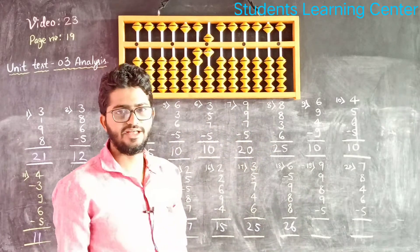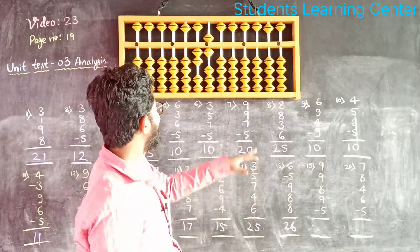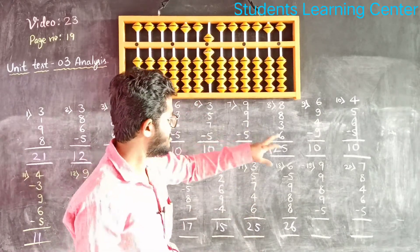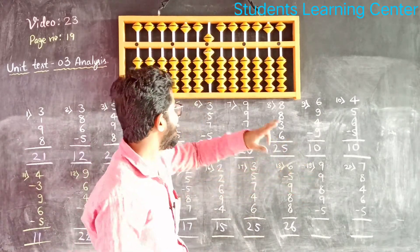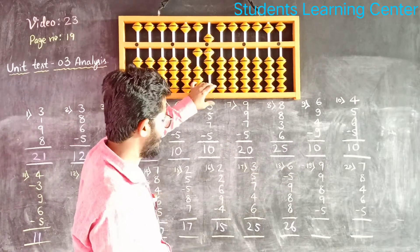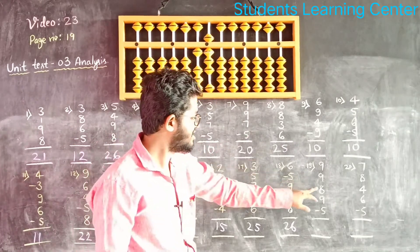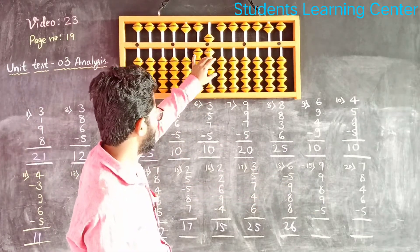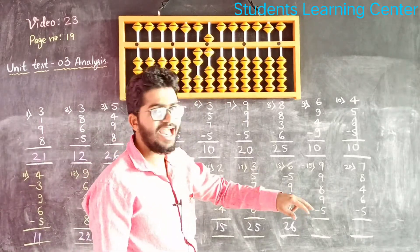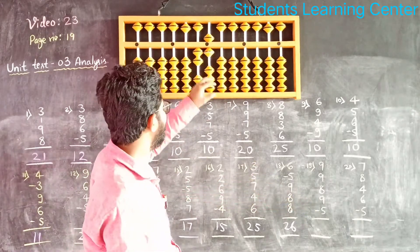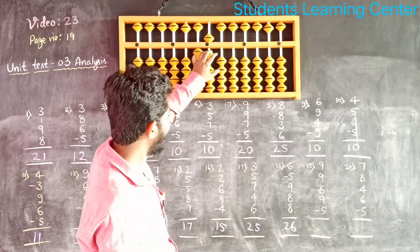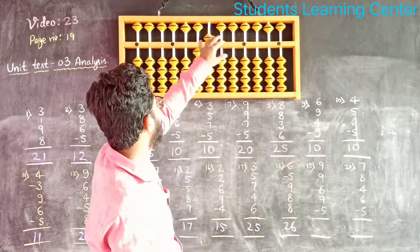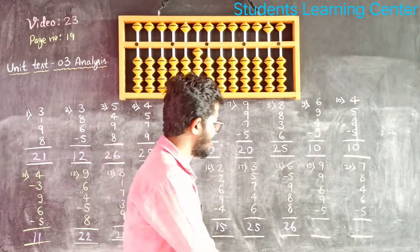Next question, question number 9. Add 9, again 9, add 10 less 1, add 8, add 10 less 2, add 9, add 10 less 1, less 5. Answer is 30.